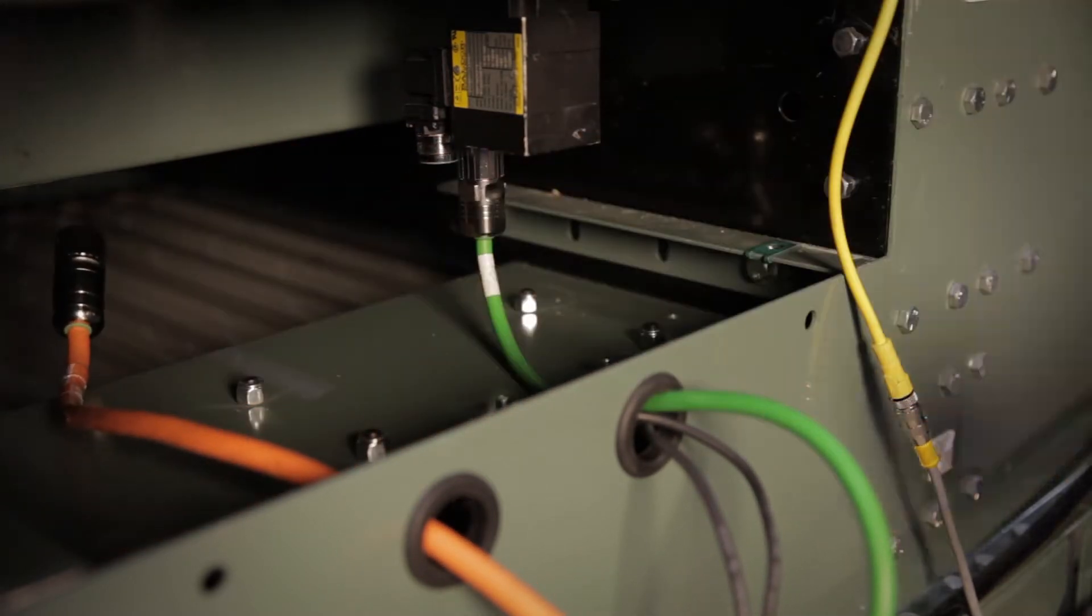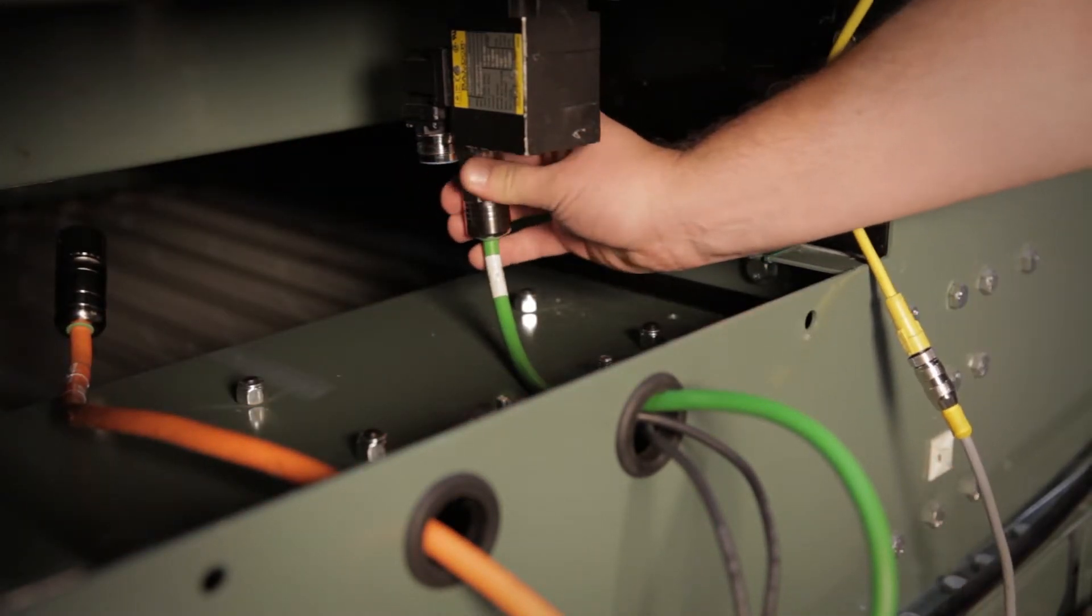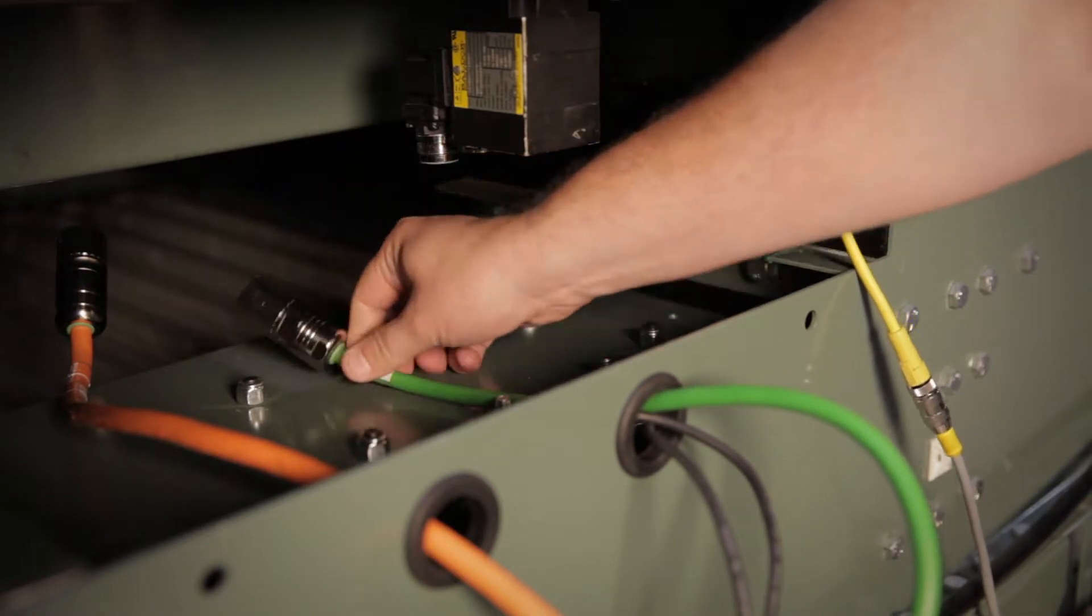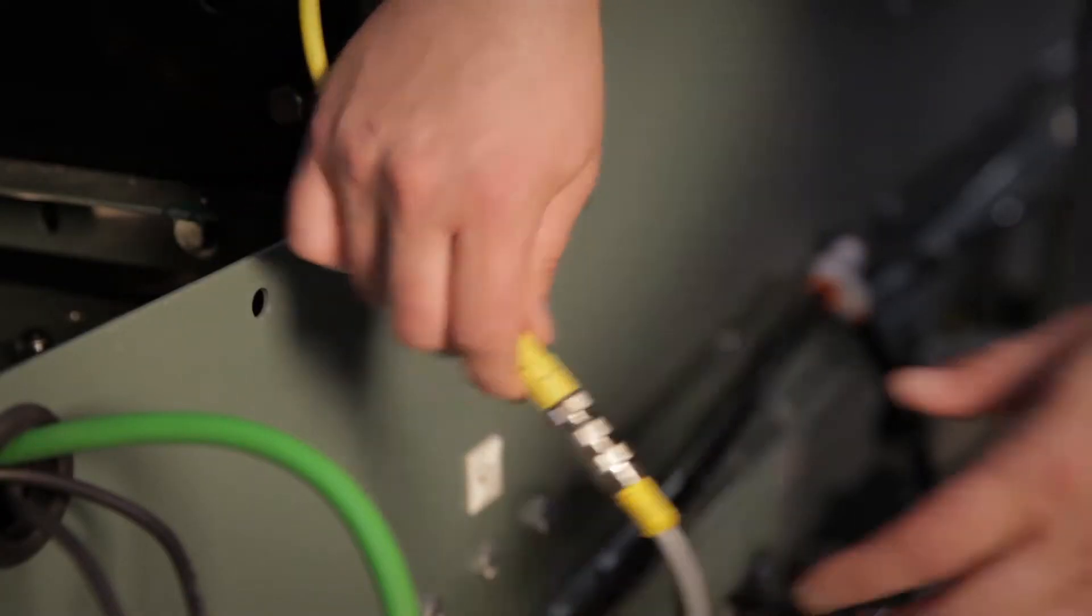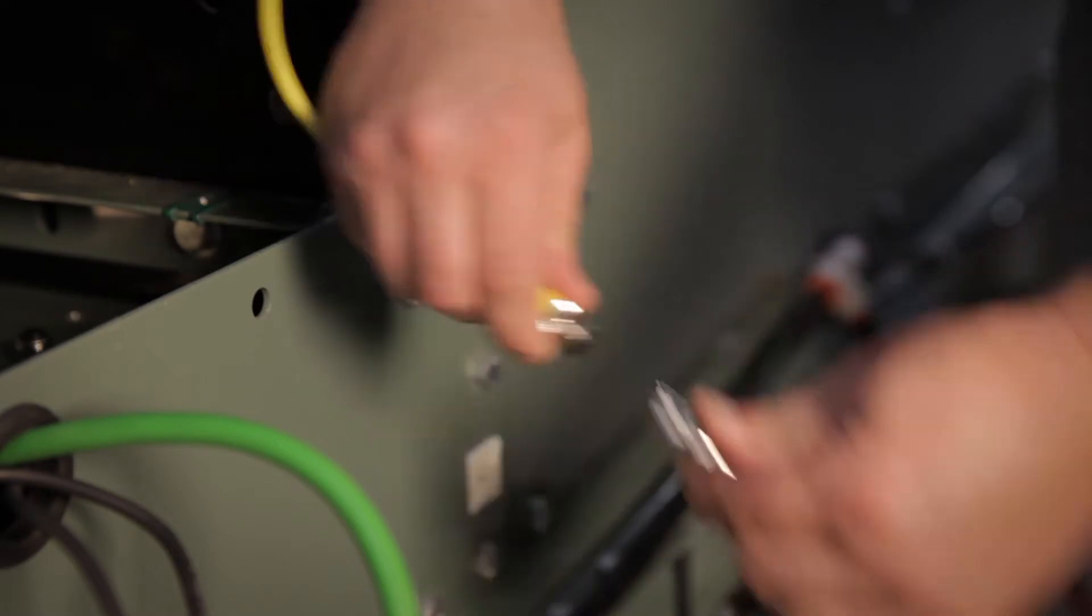Then remove the orange power cable and the green encoder cable from the servo motor mounted to the switch. Next, remove the 5-wire M12 cable connected to the SmartProx.